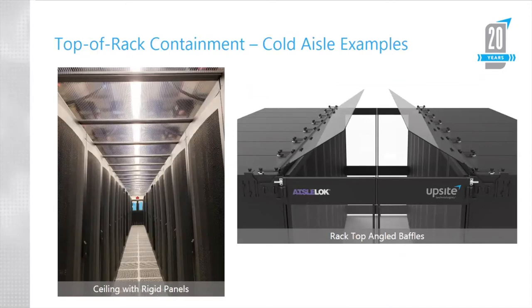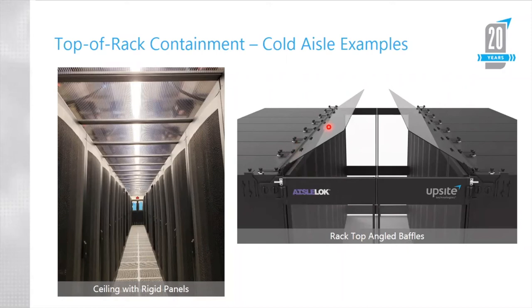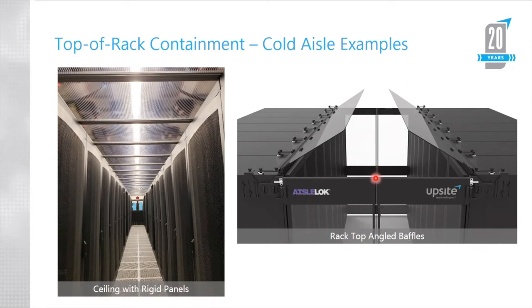Here are some examples of the options available. On the left, we have a ceiling with rigid panels — a rigid frame where the panels are sensitive to temperature, and in the event of a fire they become flexible, lose their structural integrity, and drop out of the ceiling frame. For partial containment, when a quicker and less expensive solution is desired, there are modular or rack top baffles. These are rigid baffles that attach magnetically on top of the cabinets, block exhaust air flowing over the tops of the cabinets, and contain cold air while leaving enough space for gaseous fire suppression and sprinklers to access the aisle.